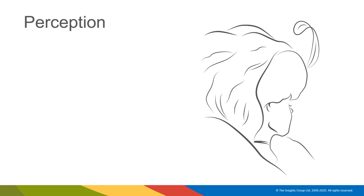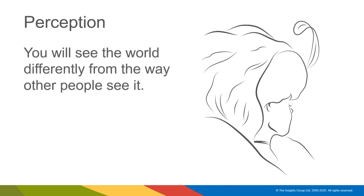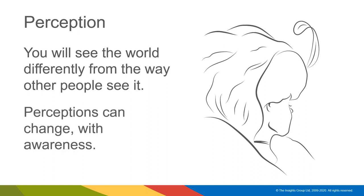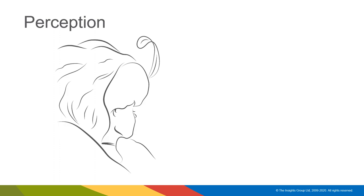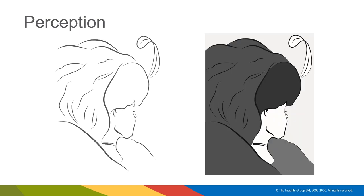Now completed with the introductions, we're ready for the first phase of the Insights Discovery Workshop: an understanding of perception — how people see the world and why people see the world differently. Let everyone know that perceptions can change over time with awareness. Ask them about the image they see here — ask if they see an older woman or a younger woman — and even invite them to tell a story about their perception. Make sure everyone has an opportunity to see both variations, and help them understand they are in charge of their perception.